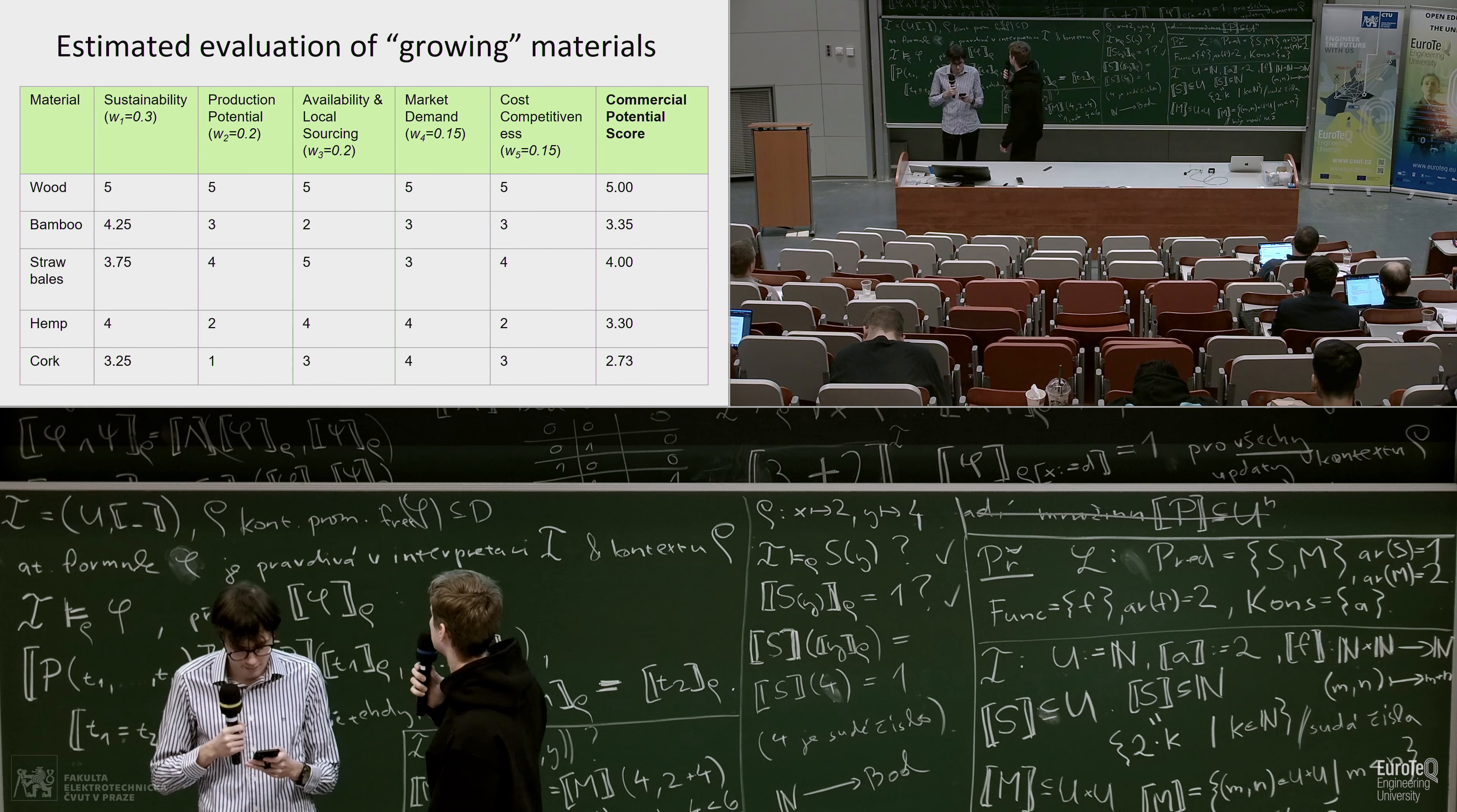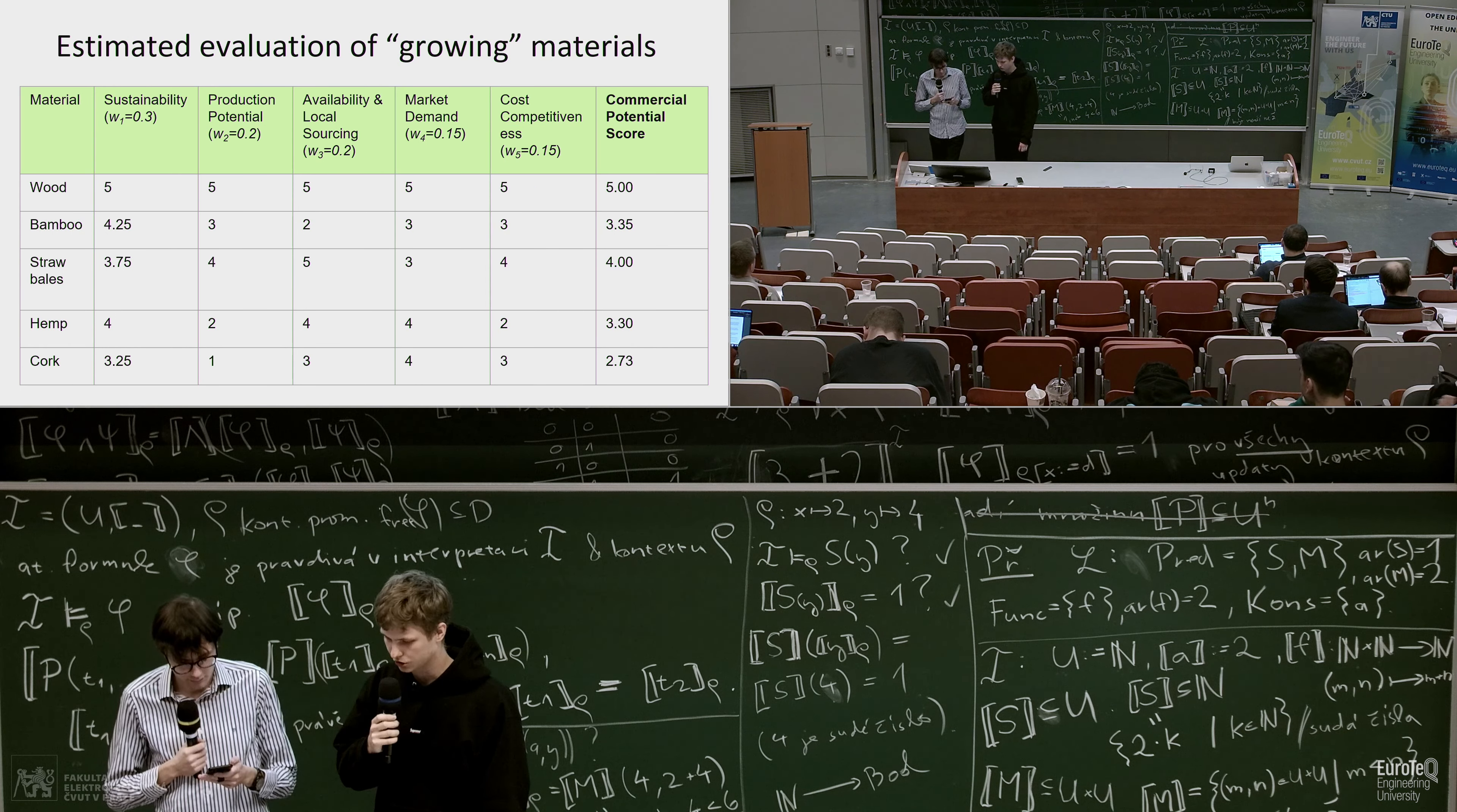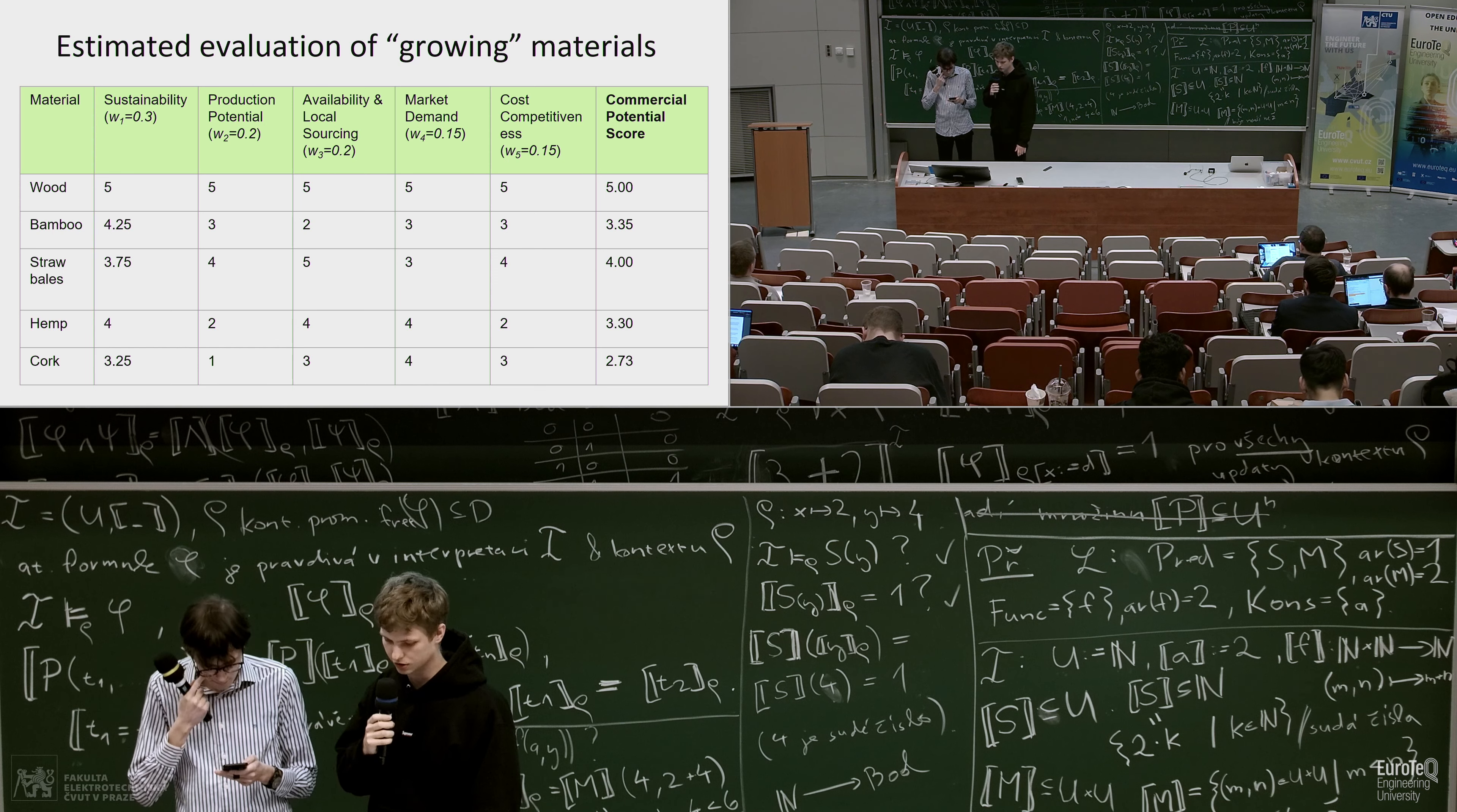This table represents our calculation. We have selected weights for each of these metrics and assigned a score to each one and calculated the resulting commercial potential score, which tells us that wood seems to be the best material among others. We would like to outline wood and straw bales, since wood can be used as a structural component and straw bales can be used as insulation material.